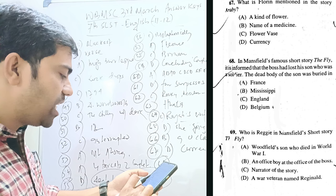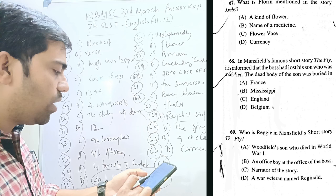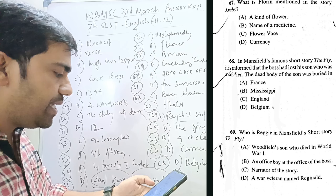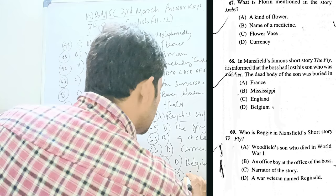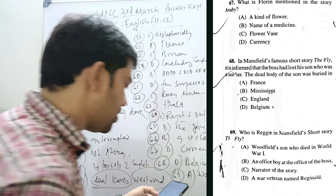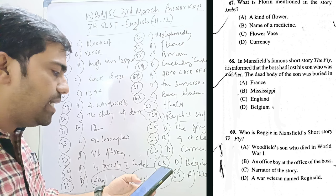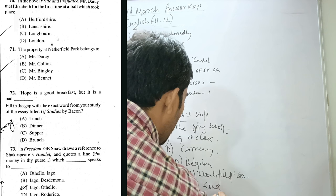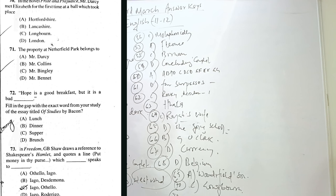In Mansfield's famous short story The Fly, it is informed that the boss had lost his own son who was a soldier. The dead body of the son was buried in Belgium. Question 69. Who is Reggie in Mansfield's short story The Fly? So, Reggie is, of course, Woodifield's son. Question 70. In the novel Pride and Prejudice, Mr. Darcy met Elizabeth for the first time at a ball which took place Longbourn. So, this is the ball where Darcy met Elizabeth and where Darcy was seen to be very arrogant type of man.